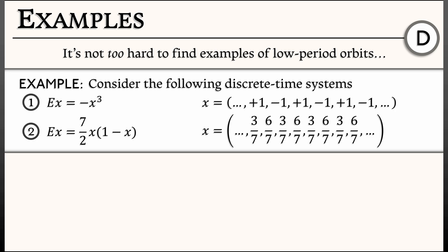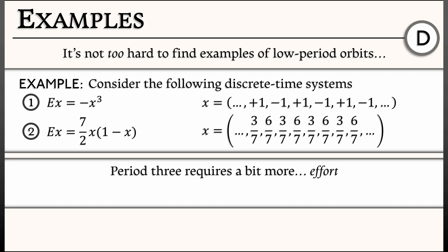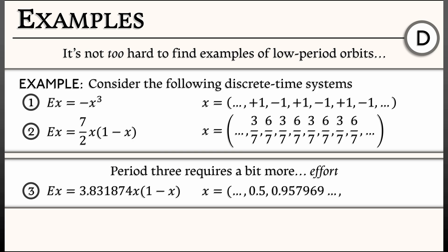Finding a period-3 orbit is going to require a bit more effort. Let's again take a simple logistic equation with an inverted parabola on the right-hand side, but I'll need to tune it more. Let's look at x' = 3.831874·x·(1 - x). If I plug in x = 1/2, I get 0.957969 next. Plugging that into the right-hand side gives 0.154290. Continuing with those decimals and plugging that number back in, I'll get 1/2 again — a periodic orbit of period 3 that works out exactly. Are you going to trust me on that, or try it out?